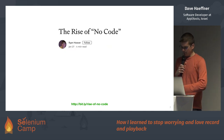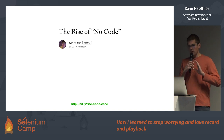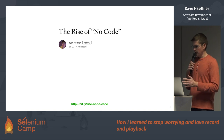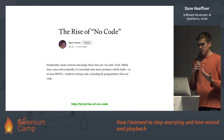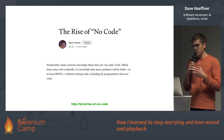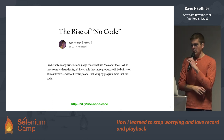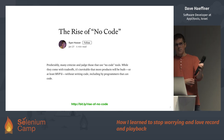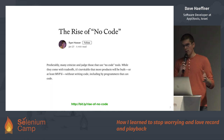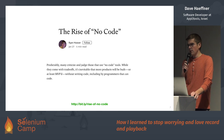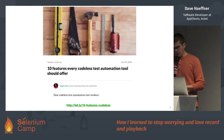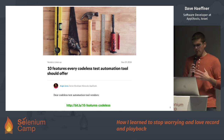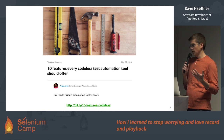There's a huge rise of codeless tools, not even just in test automation but in product development. There's a recent blog post from Ryan Hoover, the founder of Product Hunt. He says: 'Predictably, many criticize and judge those that use no-code tools. While they come with trade-offs, it's inevitable that more products will be built or at least MVP'd without writing code, including by programmers that can code.' I posit that the same argument can be made for test automation. We're actually seeing this within the user base of Selenium IDE right now — companies with very mature implementations in code are also using Selenium IDE to augment their efforts and speed up what they're working on.